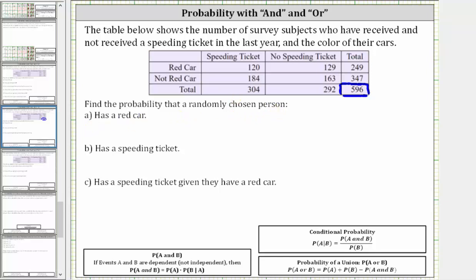Notice how we find the red cars in this row here. Notice there are a total of 249 people that have a red car. And therefore the probability a randomly chosen person has a red car is 249 out of 596 or 249 divided by 596.